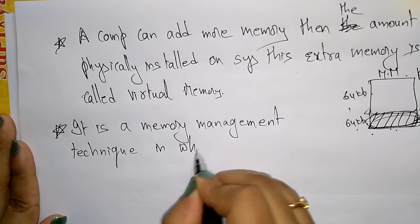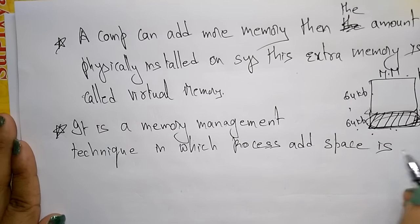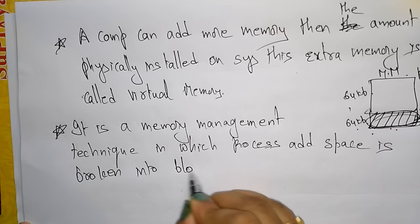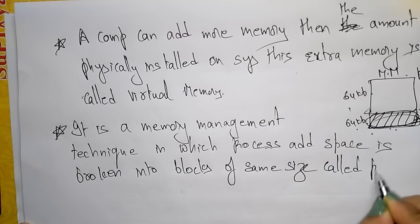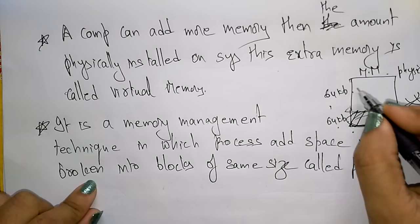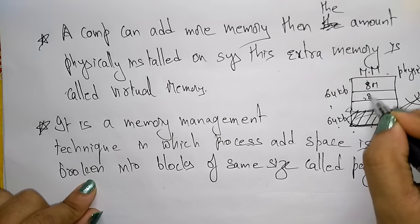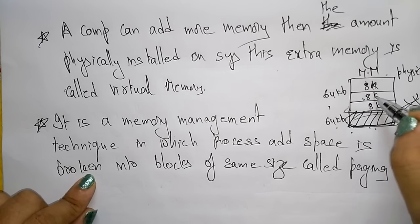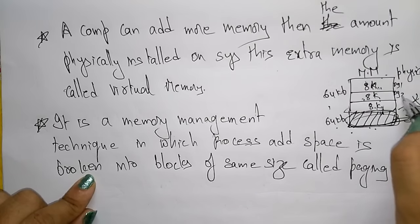In paging, the process address space is broken into blocks of the same size — for example, 8 kilobytes each. These blocks are called pages: page 1, page 2, page 3, and so on.